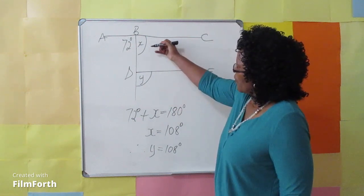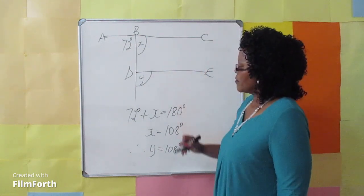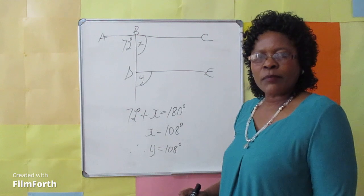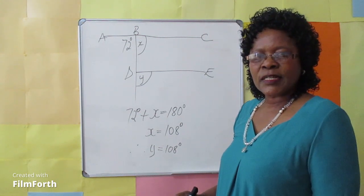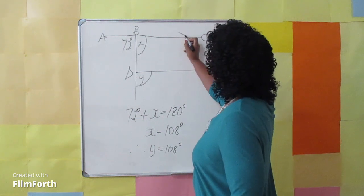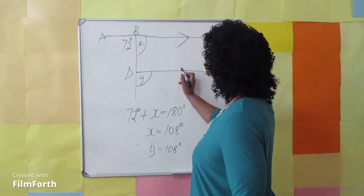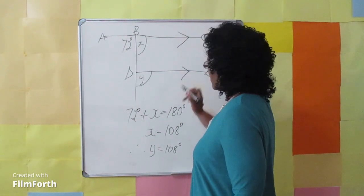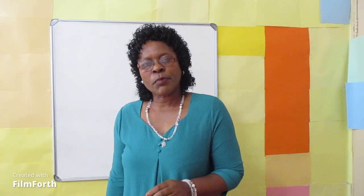The value of X and Y are equal because they are corresponding angles. A, C is parallel to D, E. Now, let's determine the value of X and Y using vertically opposite angles and corresponding angles.